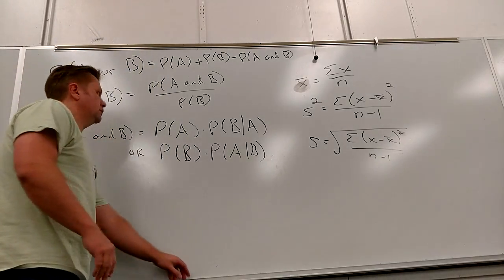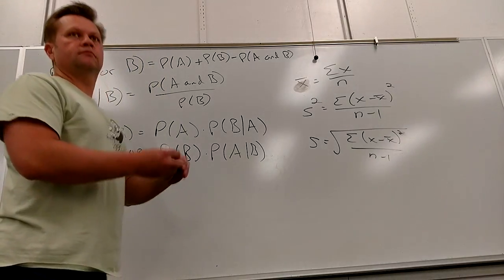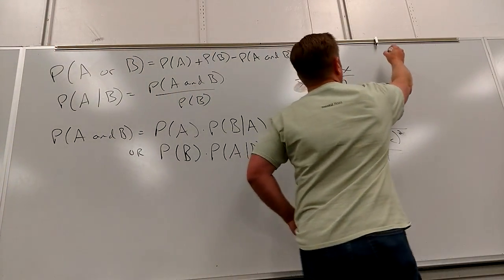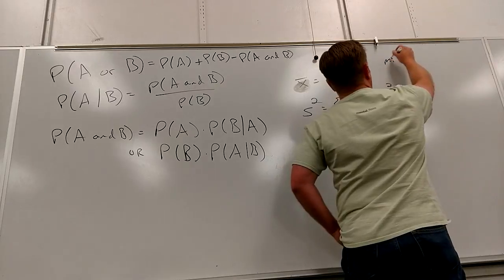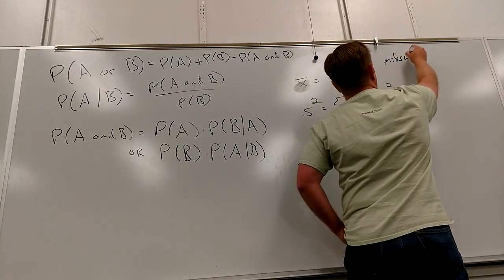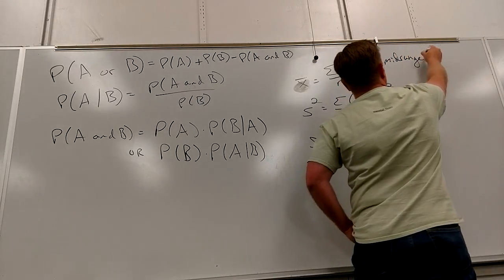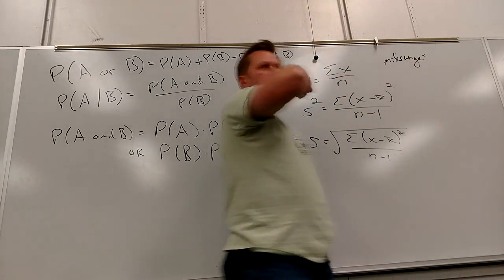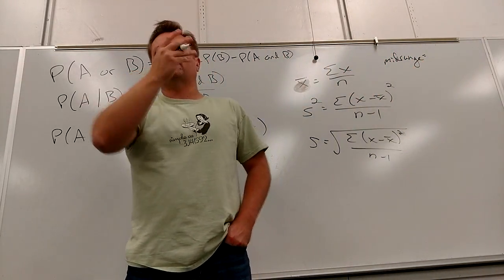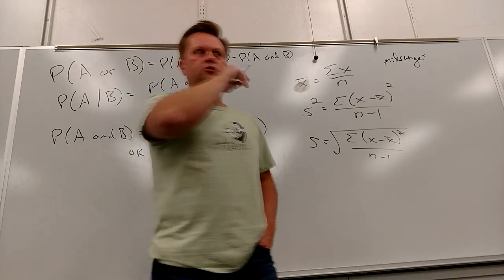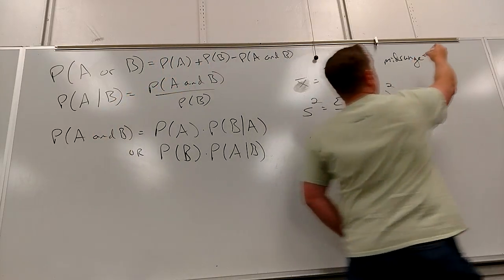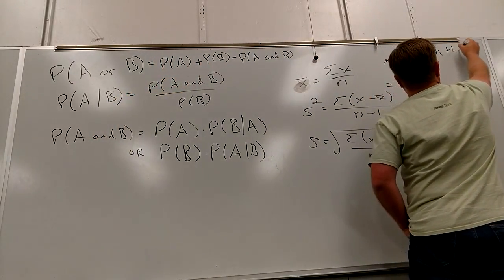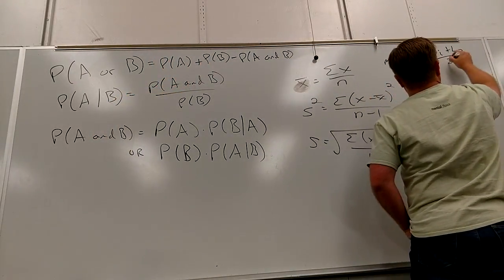We can put mid-range down there. This is one of the few words you can have on your formula sheet because it doesn't have a simple symbol. Mid-range is high plus low divided by two.